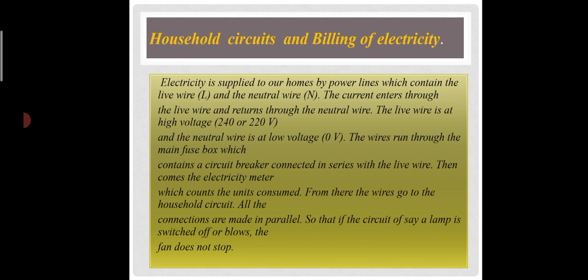Electricity is supplied to our homes by the power lines, which contain the live wire, denoted by the capital letter L, and the neutral wire, denoted by capital letter N. The current enters through the live wire L and returns through the neutral wire N. The live wire is at high voltage, approximately 220 to 240 volts. The neutral wire is at lower voltage, that is 0 volts. The wires run through the main fuse box which contains a circuit breaker connected in series with the live wires. Then comes the electricity meter, which counts the units consumed.